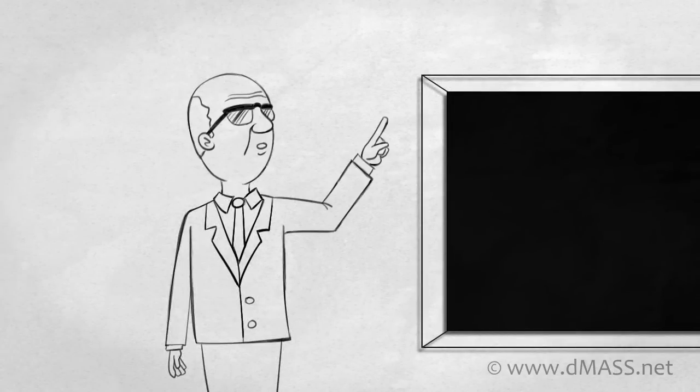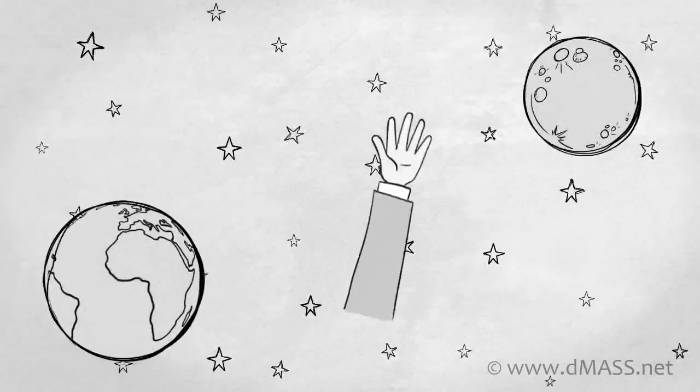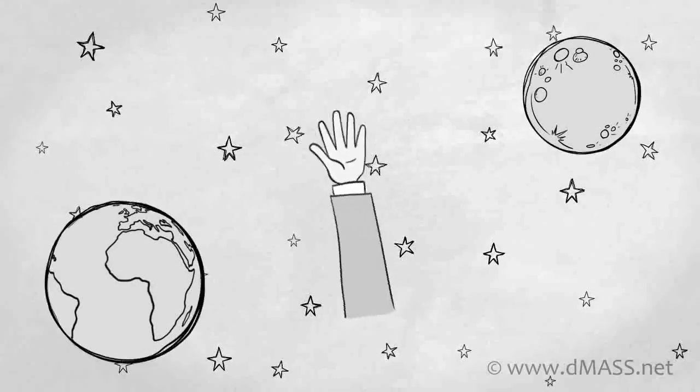And then he looked up into the sky and he waved his arms around and he said, look, I wave my arms between the earth and the moon. And the moon doesn't fall into the earth.